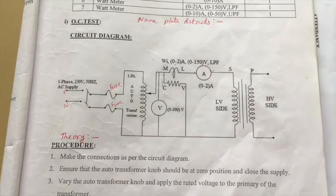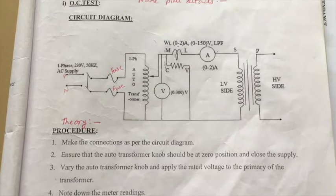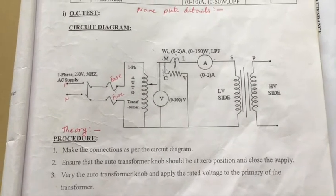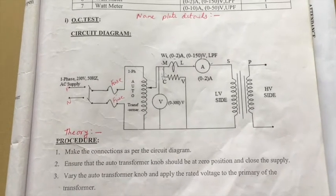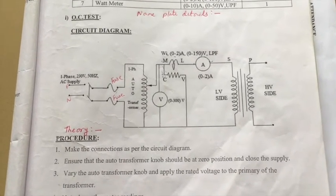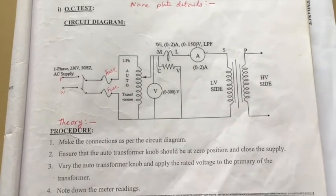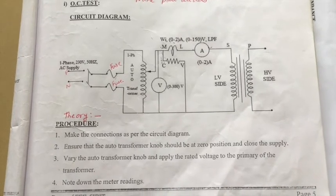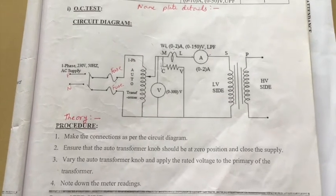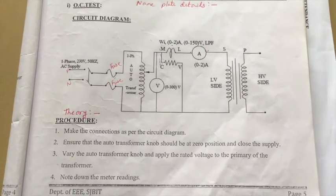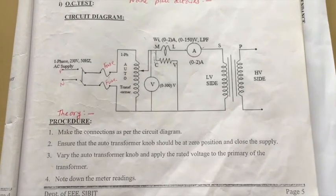Open circuit and short circuit test on a single phase transformer. The aim of this experiment is to conduct the OC and SC test on a given single phase transformer to predetermine the efficiency and regulation for different loads and power factors. In the circuit diagram, you can observe a single phase auto transformer, a low power factor wattmeter, a voltmeter, an ammeter, and a single phase transformer. A single phase supply of 230 volts, 50 Hz is connected to the main supply.